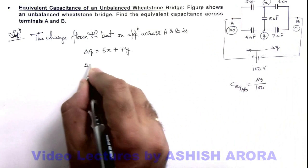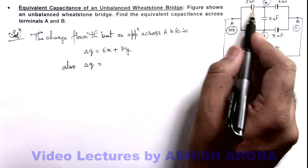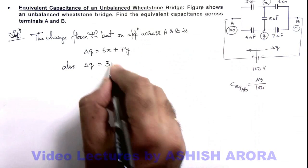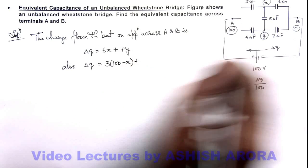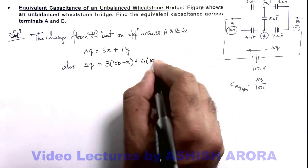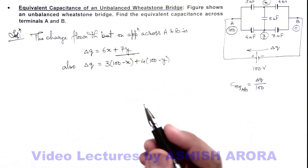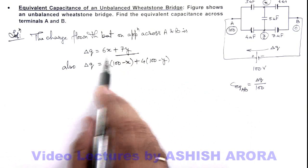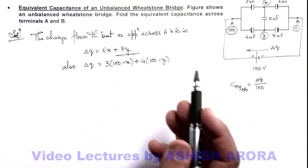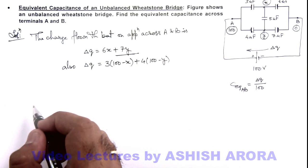Because the charges which has taken from here are placed on these two plates, so here I can also write the value of delta q as charge on this capacitor is 3 multiplied by hundred minus x, plus on this capacitor is 4 multiplied by hundred minus y. But here as I can see the first equation is simpler to analyze, so if I get the value of x and y I use this to calculate, and x and y I can calculate by writing equations for x and y.